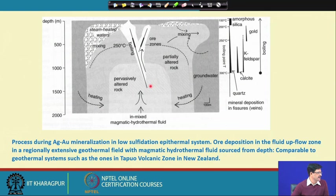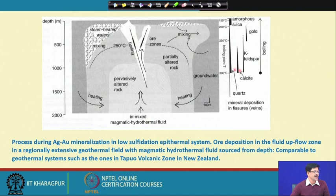These systems are very much comparable to geothermal systems such as the one in the Taupo volcanic zone in New Zealand. The epithermal deposits in young volcanic islands involve fluids essentially within 200 to 250 degrees centigrade with a very significant meteoric water component. The pH of the fluid is within the stability field of potassium feldspar, and calcite sometimes appears in the mineralogy. Minerals are deposited in fissure veins in such systems.